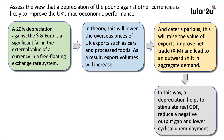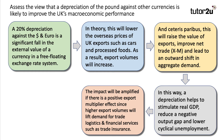In this way, a currency depreciation helps to stimulate real GDP, reduce a negative output gap, take the economy closer to its PPF, and lower cyclical unemployment. In that one sentence, you've got real GDP, output gap, and cyclical unemployment — three concepts building the analysis. And the impact will be amplified if there's a positive export multiplier effect. Because if you're trading more exports, you're going to need logistics companies, trade insurance, trade credit companies — quite a few businesses whose revenues and profits are linked to the volume of trade. That's the export multiplier.